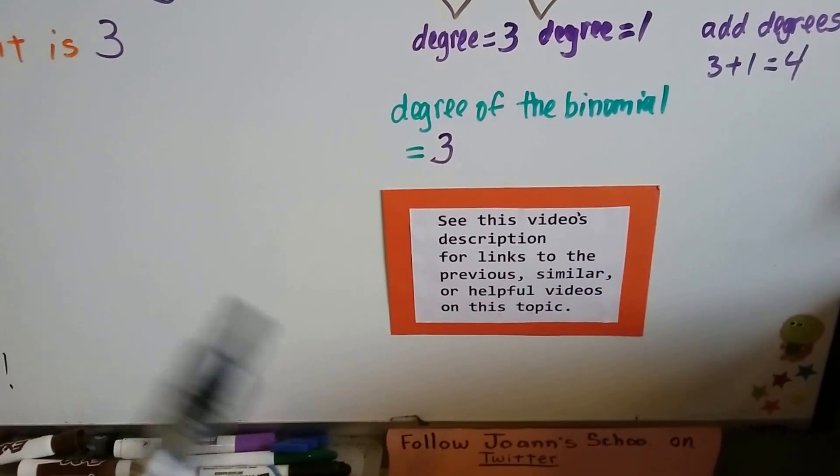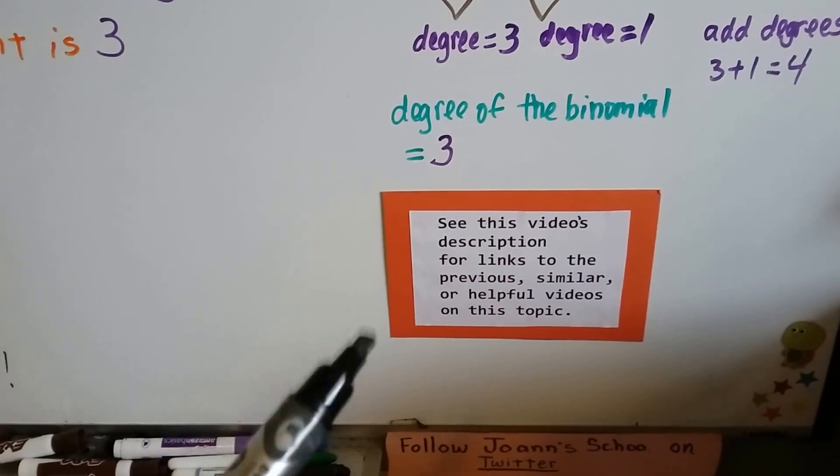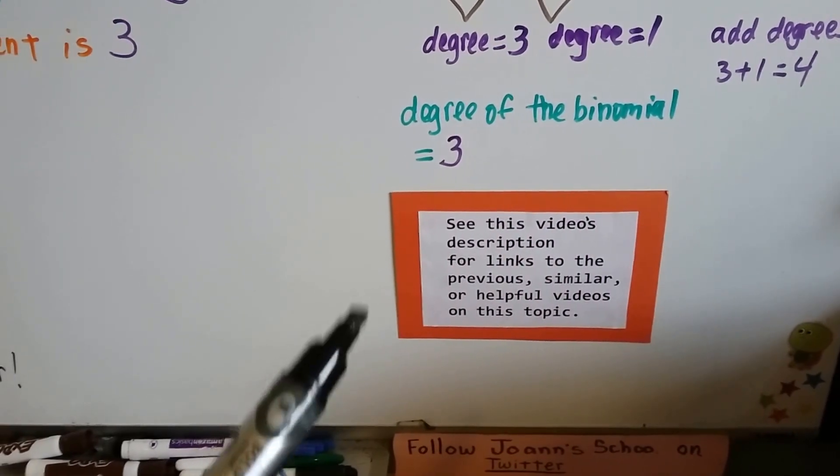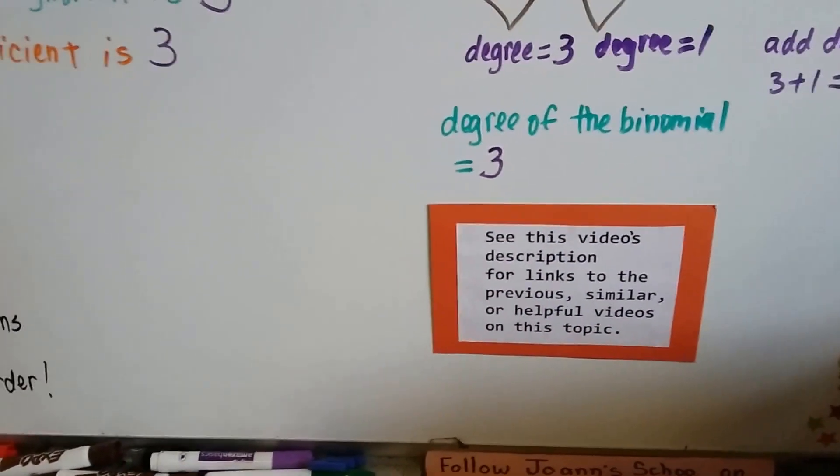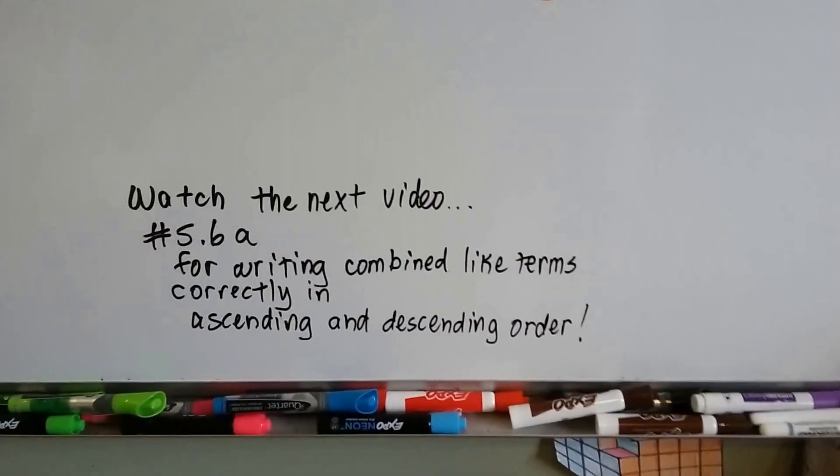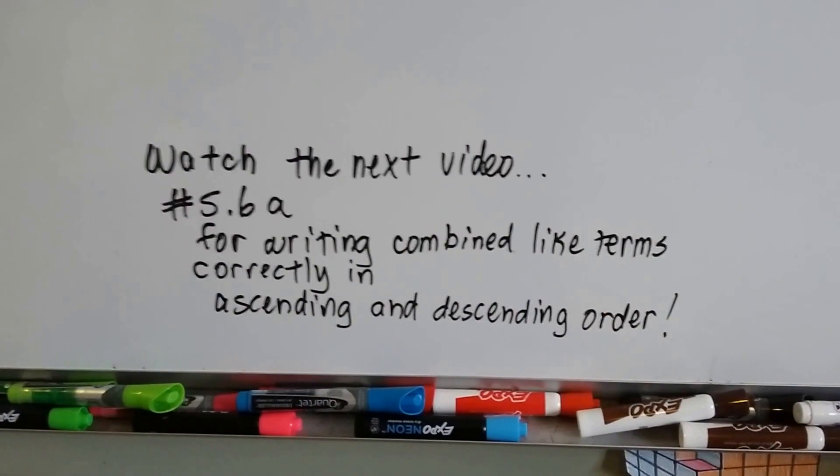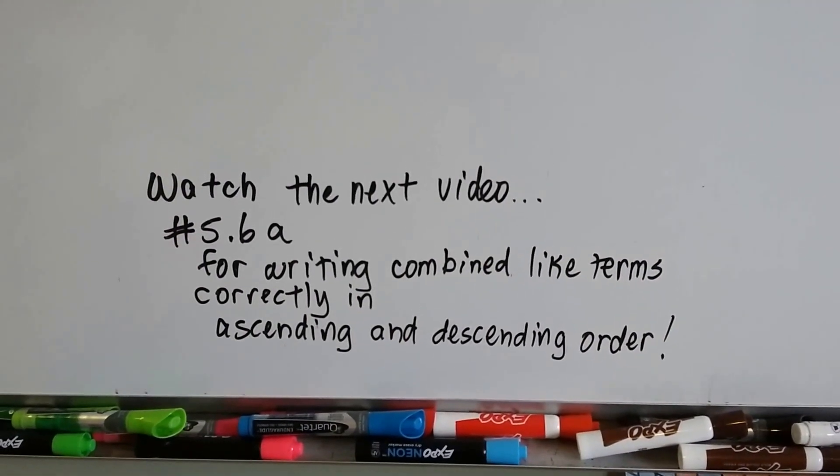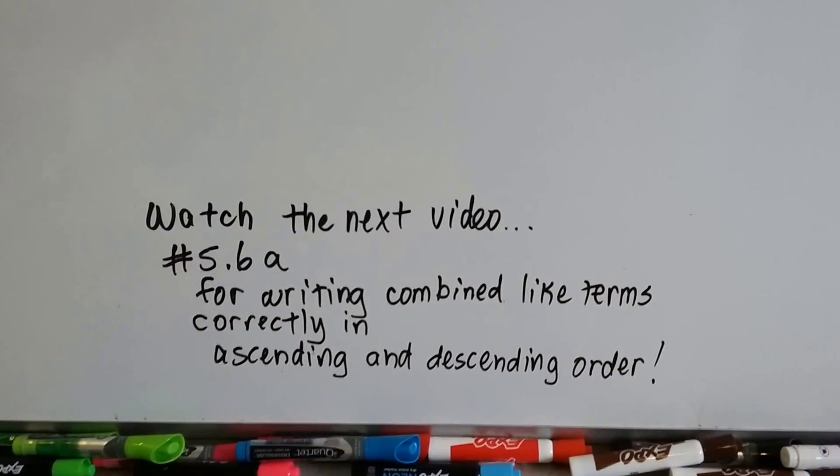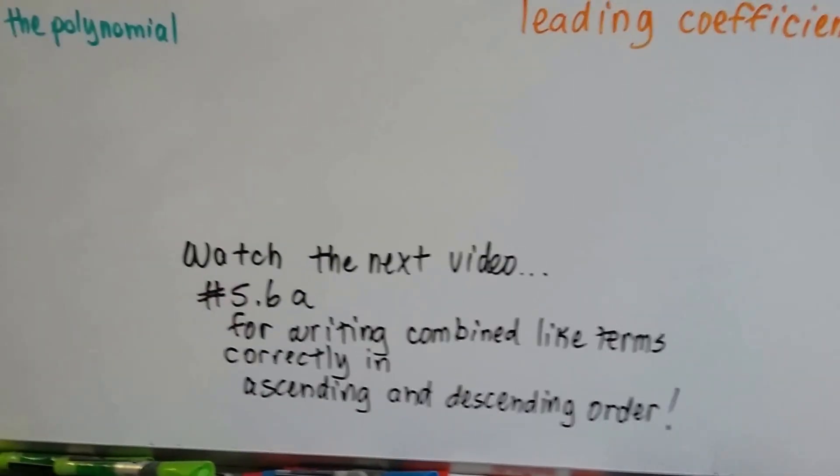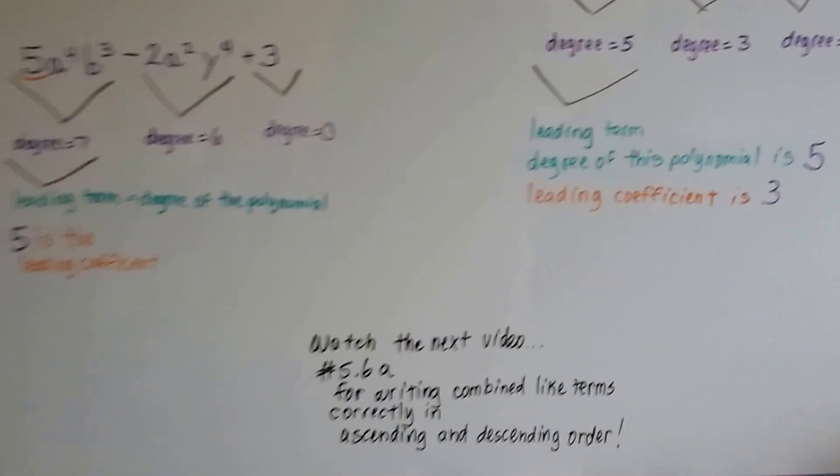So, remember to watch videos, and there's going to be links in this description for helpful videos. But, what's really important, watch the next video, 5.6a. We're going to talk about writing combined like terms correctly in ascending and descending order. So there's an actual way to do it correctly. You can't just write any terms.